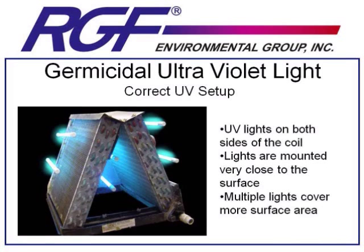This is an effective UV light installation for keeping a coil clean. UV lights are mounted on both sides of the coil, very close to the surface to minimize power loss due to distance, and multiple lights are used to cover the surface area, ensuring every area receives as much UV light as possible. Even with an advanced UV light setup like this, you're going to be unable to achieve any meaningful purification in air moving through an HVAC system.